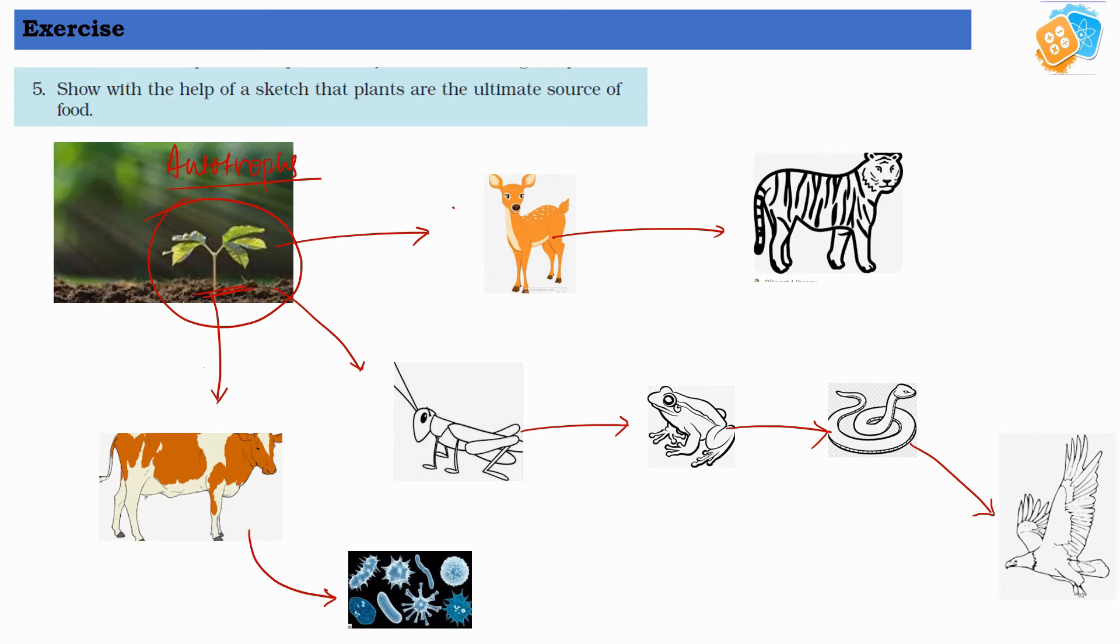So this is the sketch which will show that plants are the ultimate source of food. If plants are not there, then deer will not survive, and ultimately tiger will also face the scarcity of food.